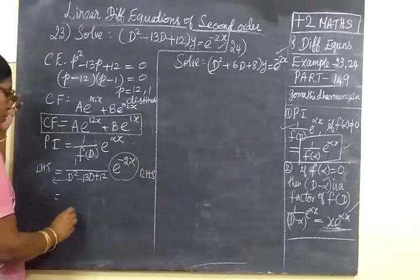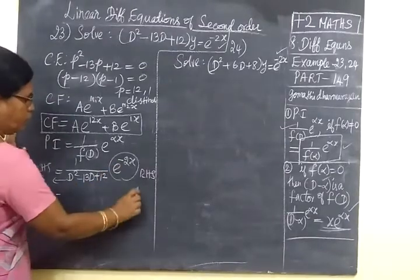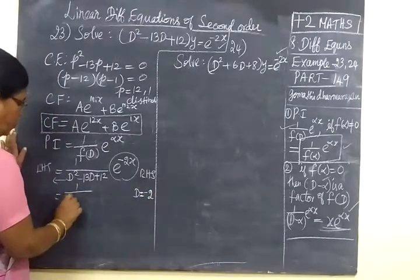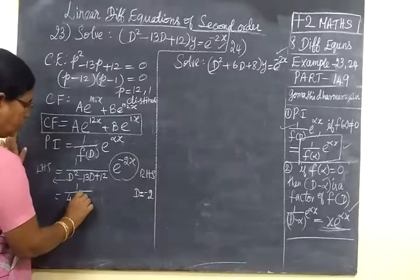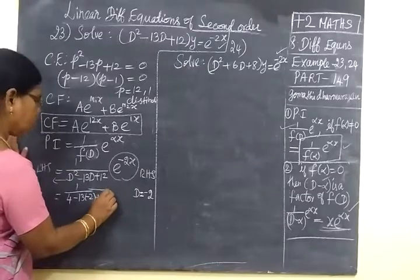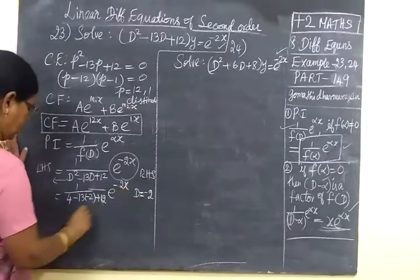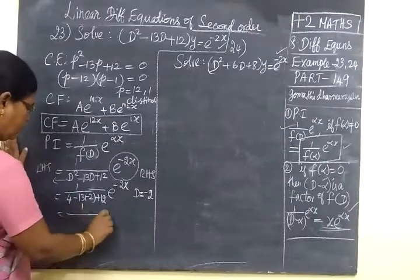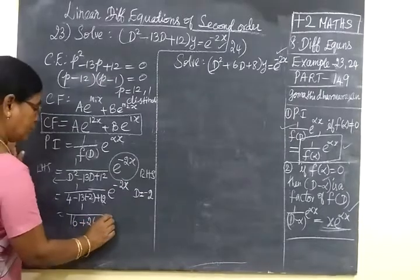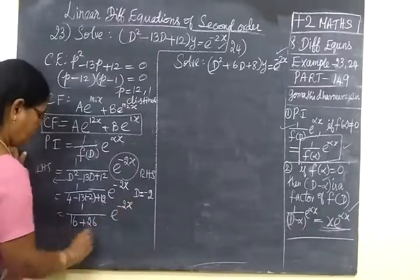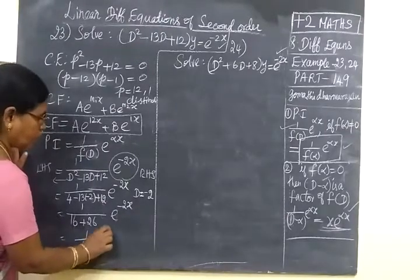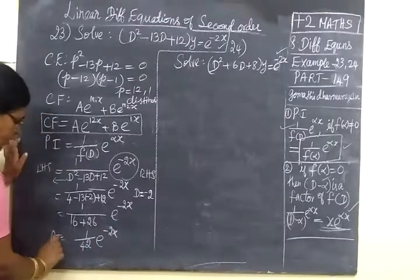Now substitute d equal to minus 2. So minus 2 squared gives 4, minus 13 into minus 2 gives 26, then plus 12. So this equals 1 by 4 plus 26 plus 12, then e power minus 2x. That gives 1 by 42, e power minus 2x. So this is the particular integral.